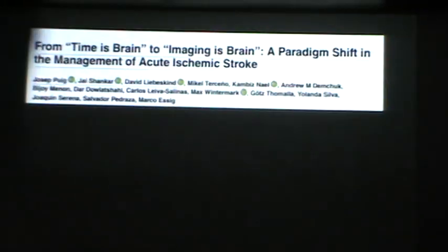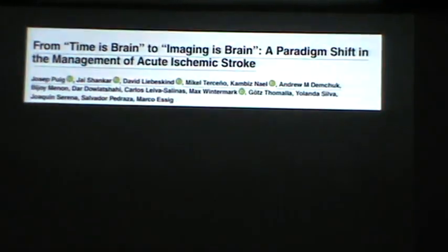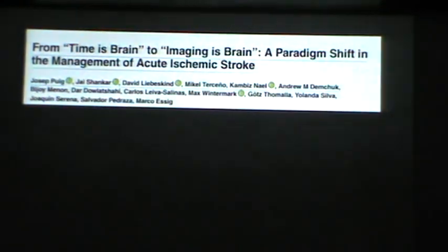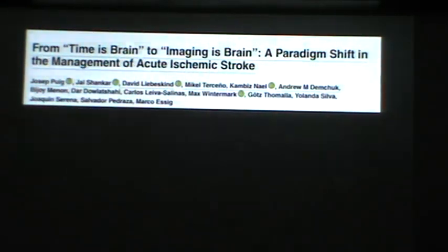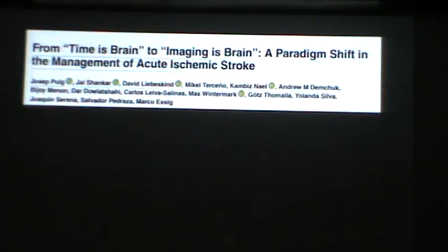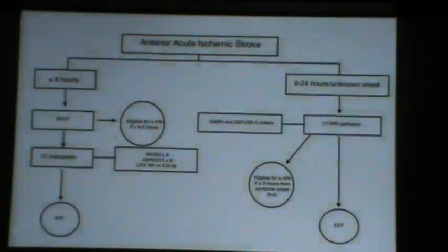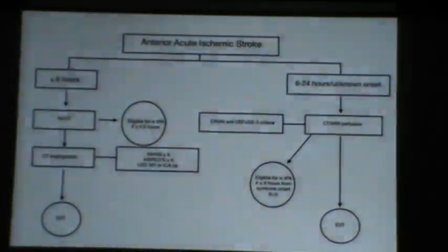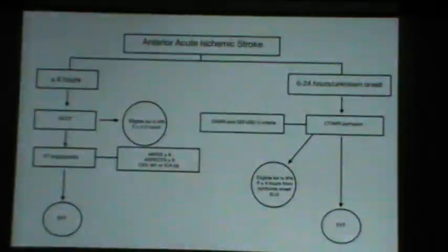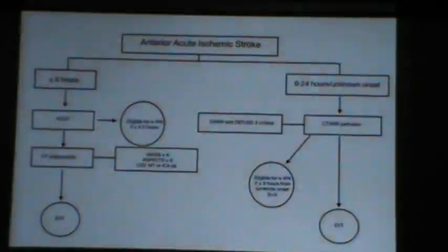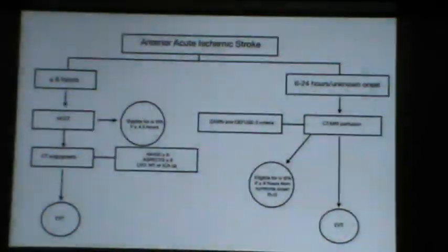In searching for the imaging guideline for acute ischemic stroke, an imaging guideline from 2018 describes a paradigm shift from 'time is brain' to 'imaging is brain,' in which for anterior acute circulation stroke within or before six hours, we perform non-contrast CT and CT angiography.